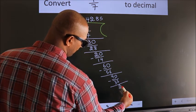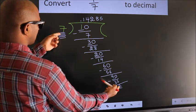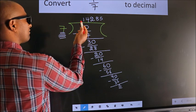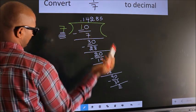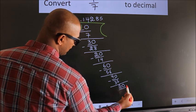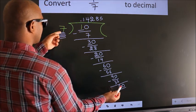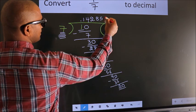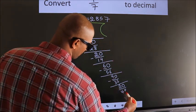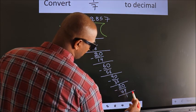Here we have 5, here 7. 5 is smaller than 7. And we already have the decimal, so we can directly take 0. So, 50. A number close to 50 in the 7 table is 7 sevens, 49. Now, we subtract. We get 1.